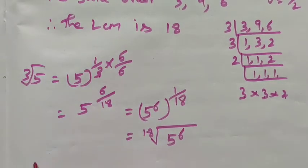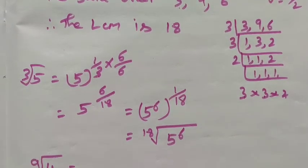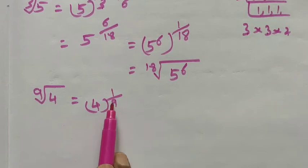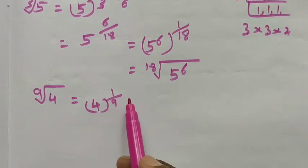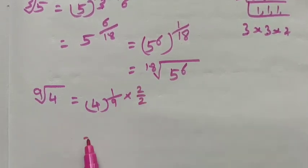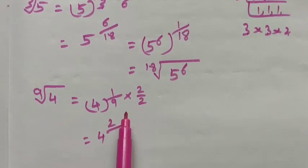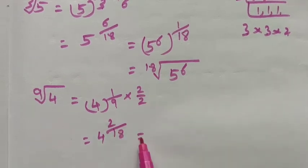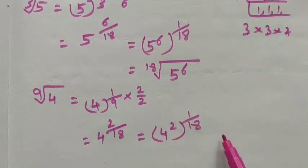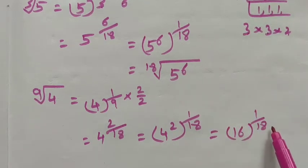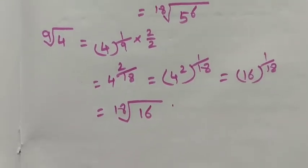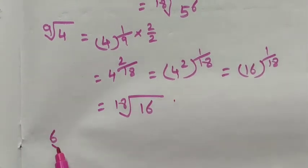Next we have 9th root of 4. The 9th root of 4 means 4 to the power 1 by 9. We have to multiply and divide by the same number — 2 — to get the same order 18: 2 × 1 = 2 divided by 9 × 2 = 18. This term equals 4 squared, whole to the power 1 by 18. 4 squared is 16, so this is the 18th root of 16.